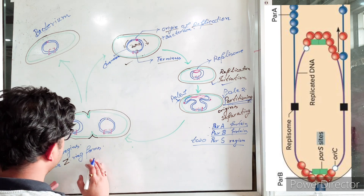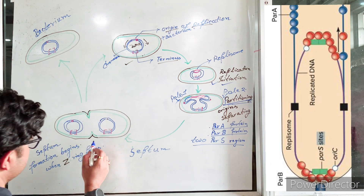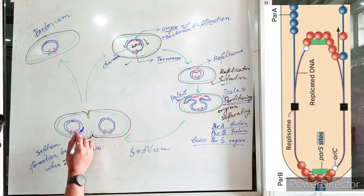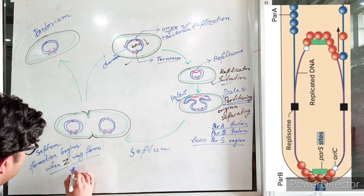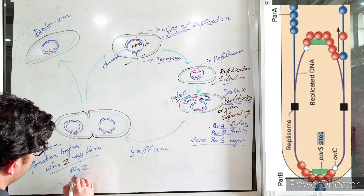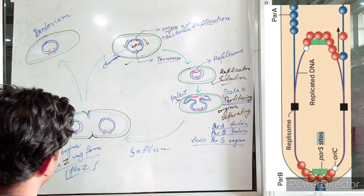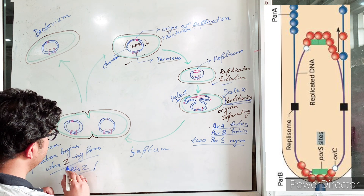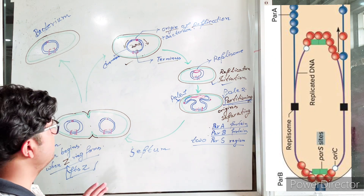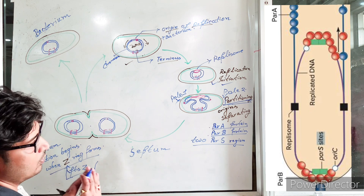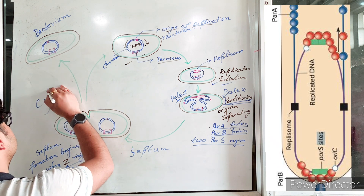Now, septum formation begins. The septum always forms from the middle of the cell. The condition for septum formation is that a Z-ring must be present, composed of the cytoskeletal protein FtsZ — the eukaryotic equivalent protein. FtsZ forms the Z-ring, and with the help of the Z-ring, the septum is formed. The cell starts to divide from the middle — peptidoglycan is synthesized, the cell membrane is synthesized, and the cell divides.